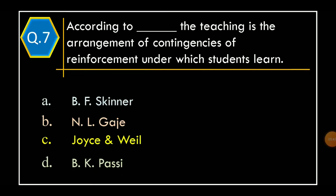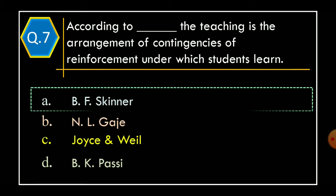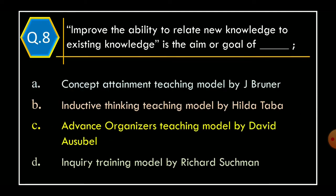Question 7. According to whom is it stated that teaching is the arrangement of contingencies of reinforcement under which students learn? Option A – BF Skinner. Option B – NL Gajay. Option C – Joyce and Weil. Option D – BK Pasi. The correct option is Option A: BF Skinner.